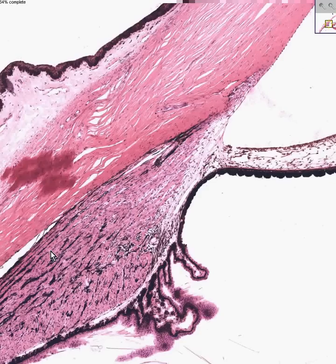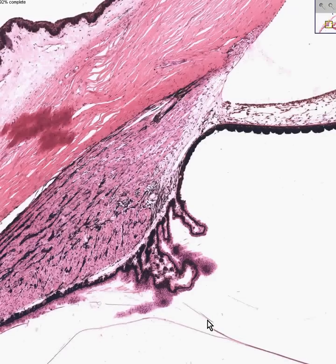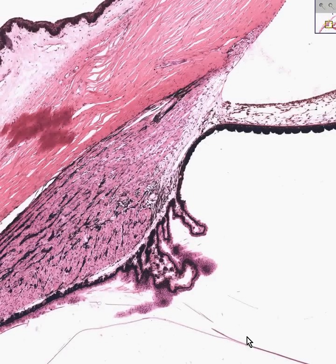This is the ciliary body. These are ciliary processes. They contain these small little zonular fibers, which are like tiny tendons, that help flatten the lens and they pull by virtue of the smooth muscle fibers in the ciliary body.